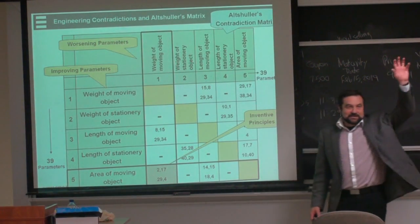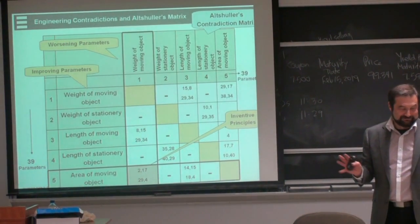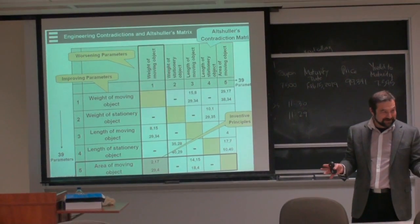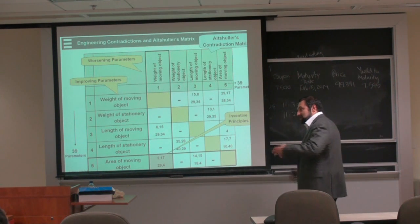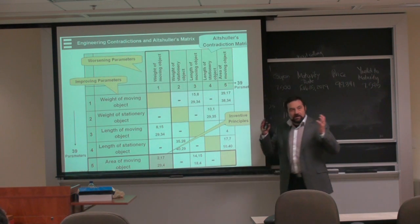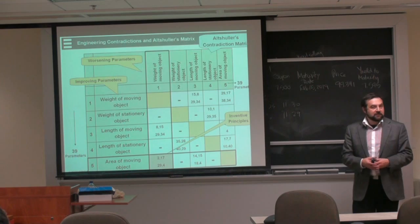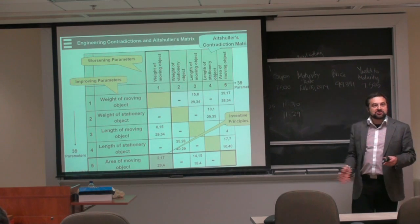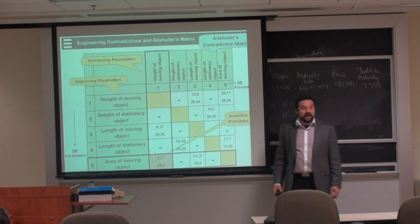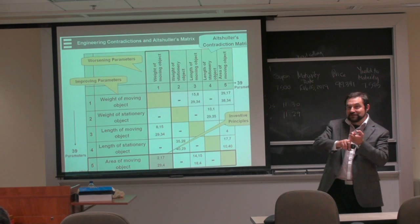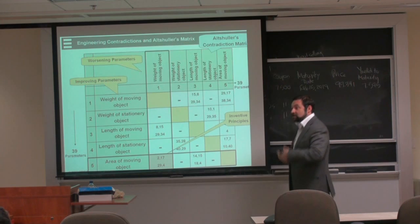So, what Altshuller said, he, as I said, analyzed all these patents. Legend says that he analyzed millions of patents. But nobody from Gen Z believes me and says, I don't believe in that, in millions. But he did analyze hundreds of thousands of patents. And he said that all the problems that people tried to solve could be formulated and generalized in a certain way. And he found 39 ways to generalize this problem. And he put this on a vertical and horizontal axis. And in the middle, he said, what people did in order to solve this problem.